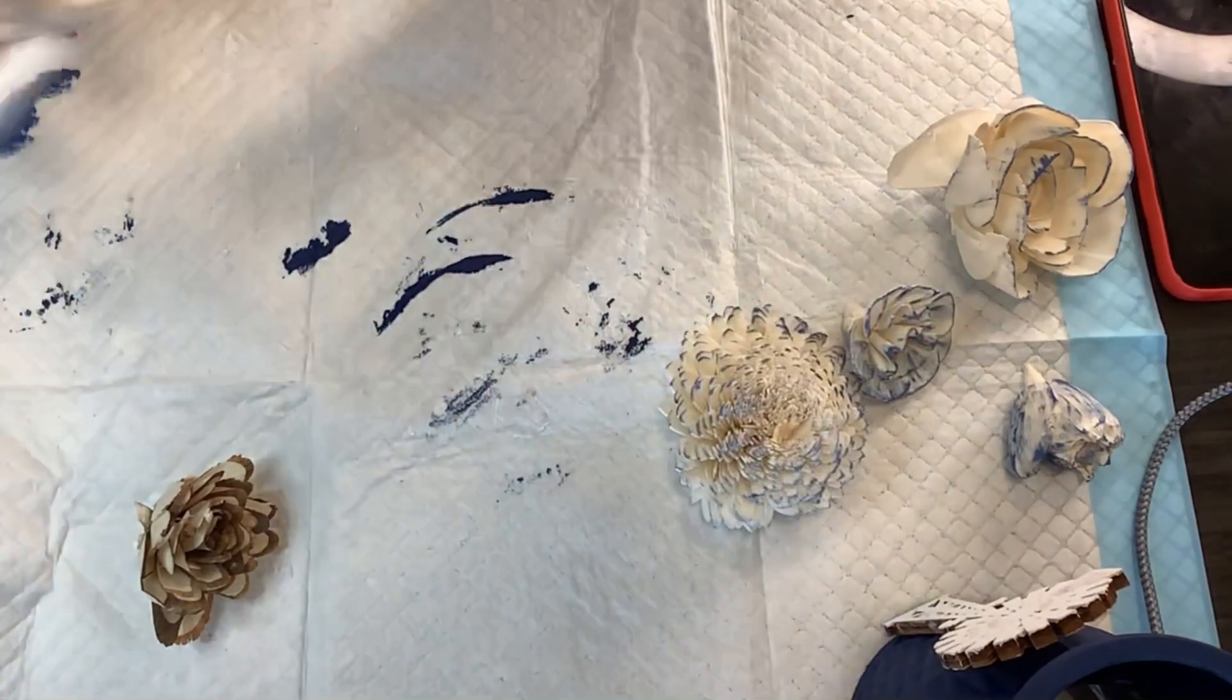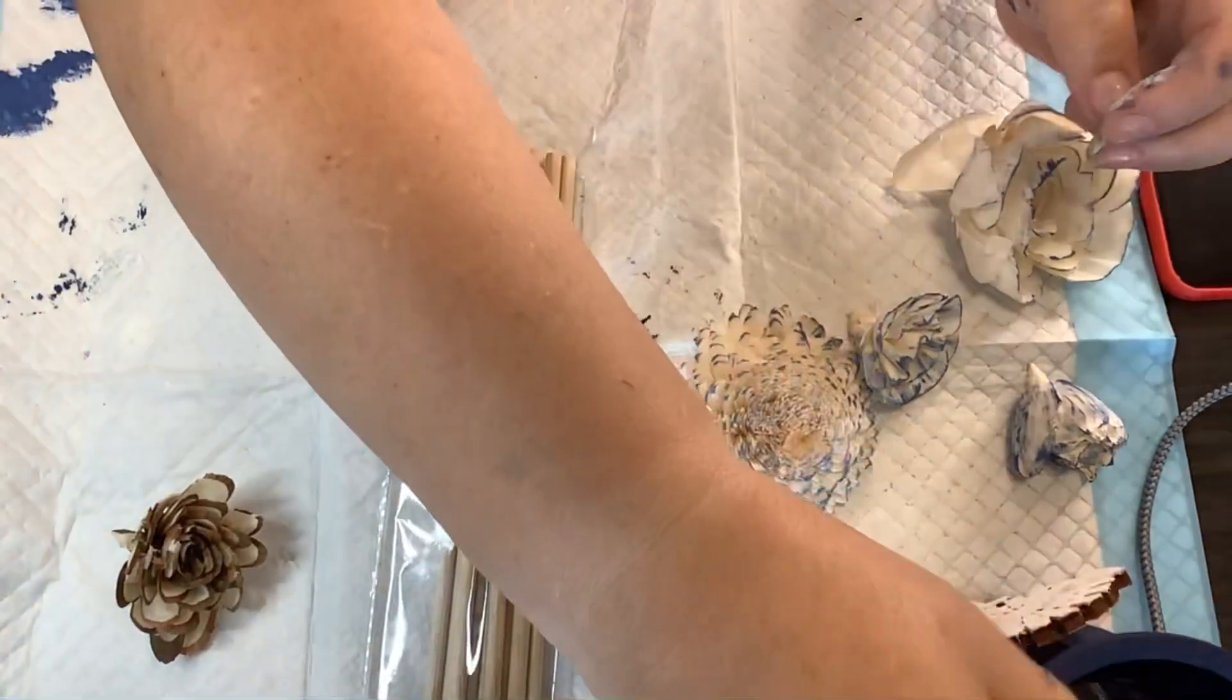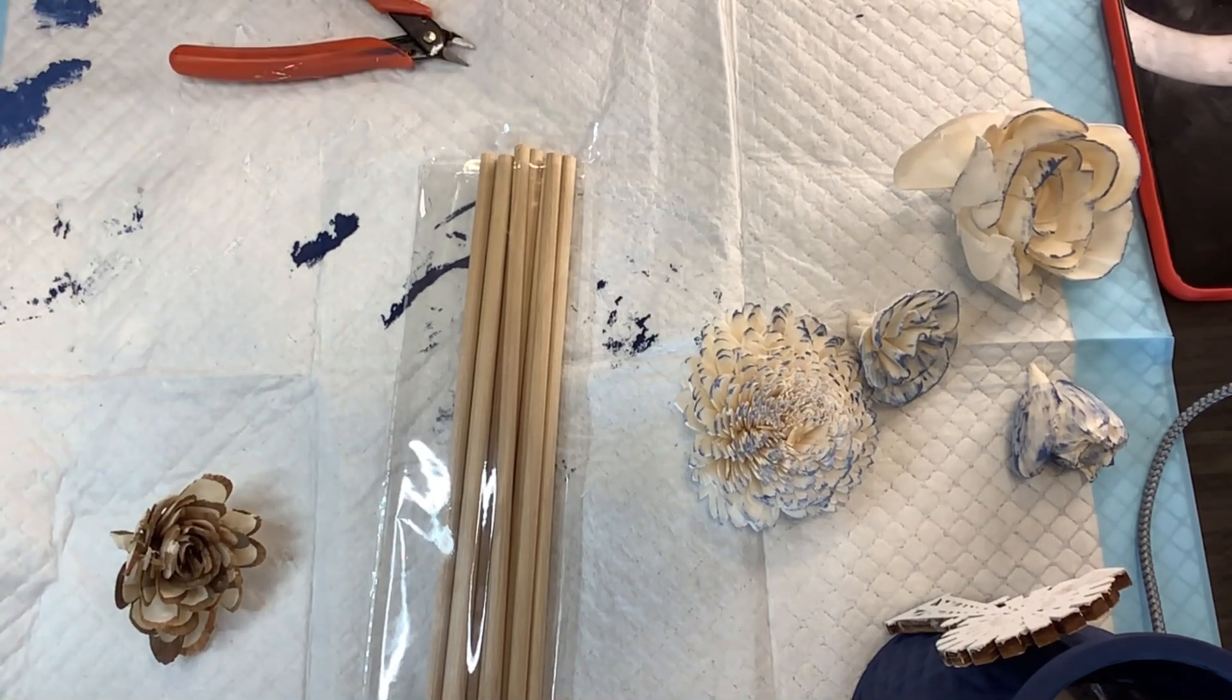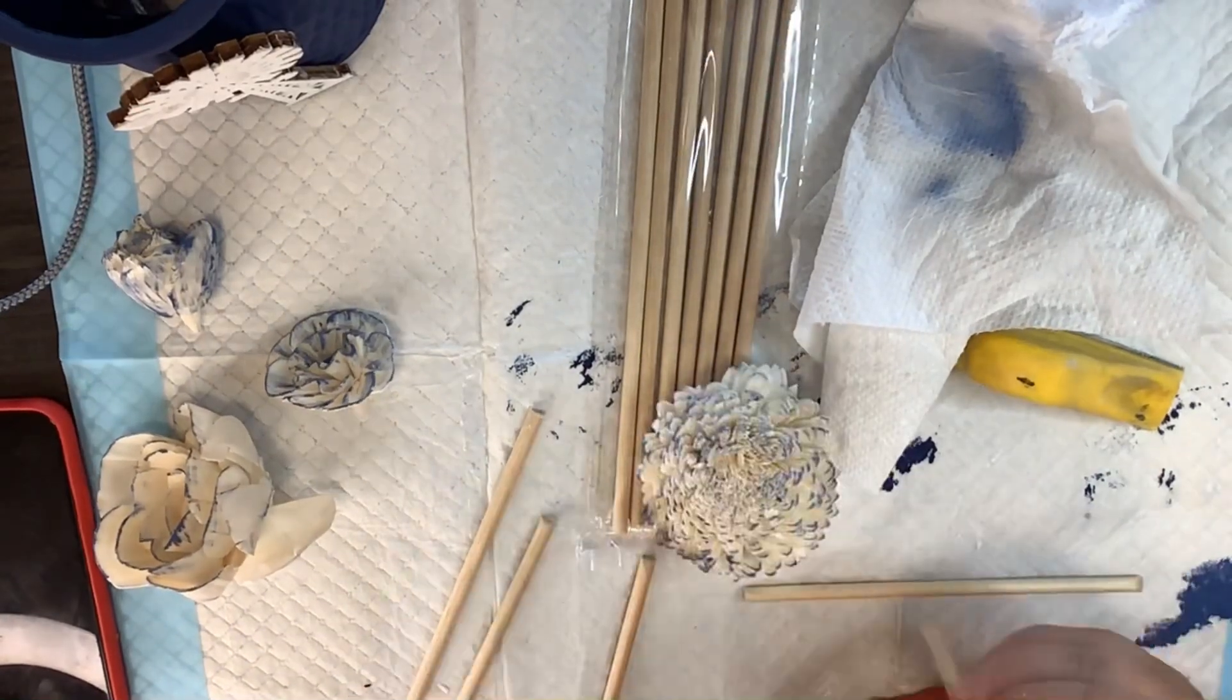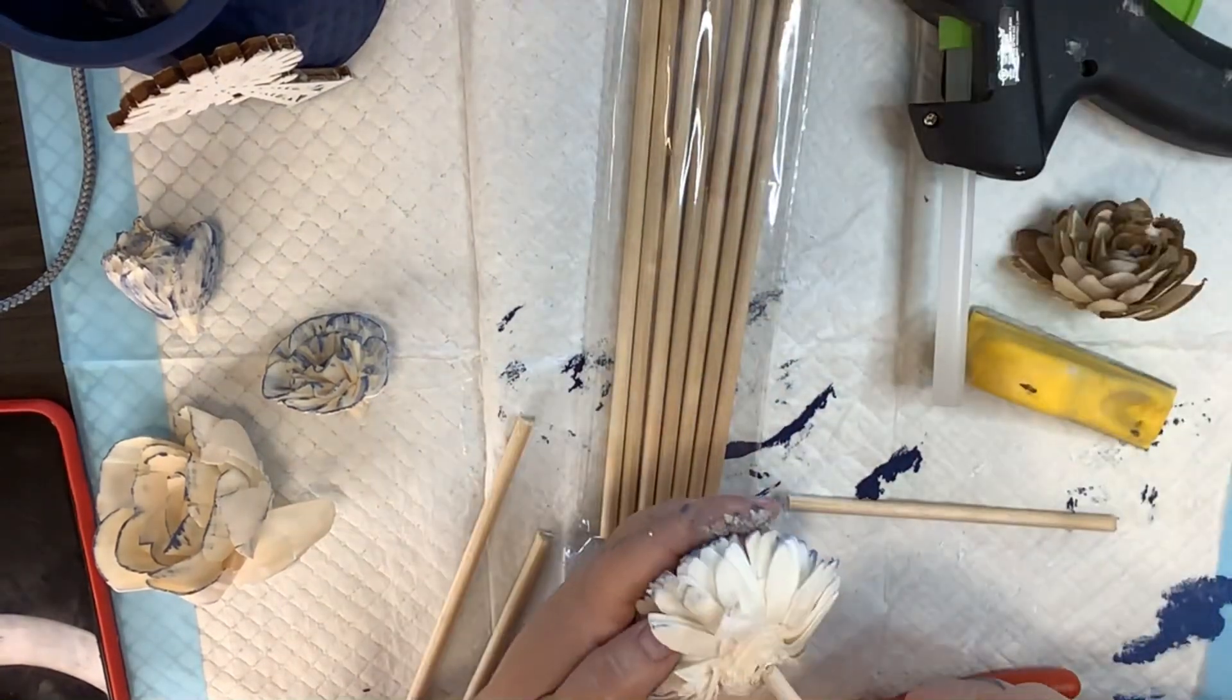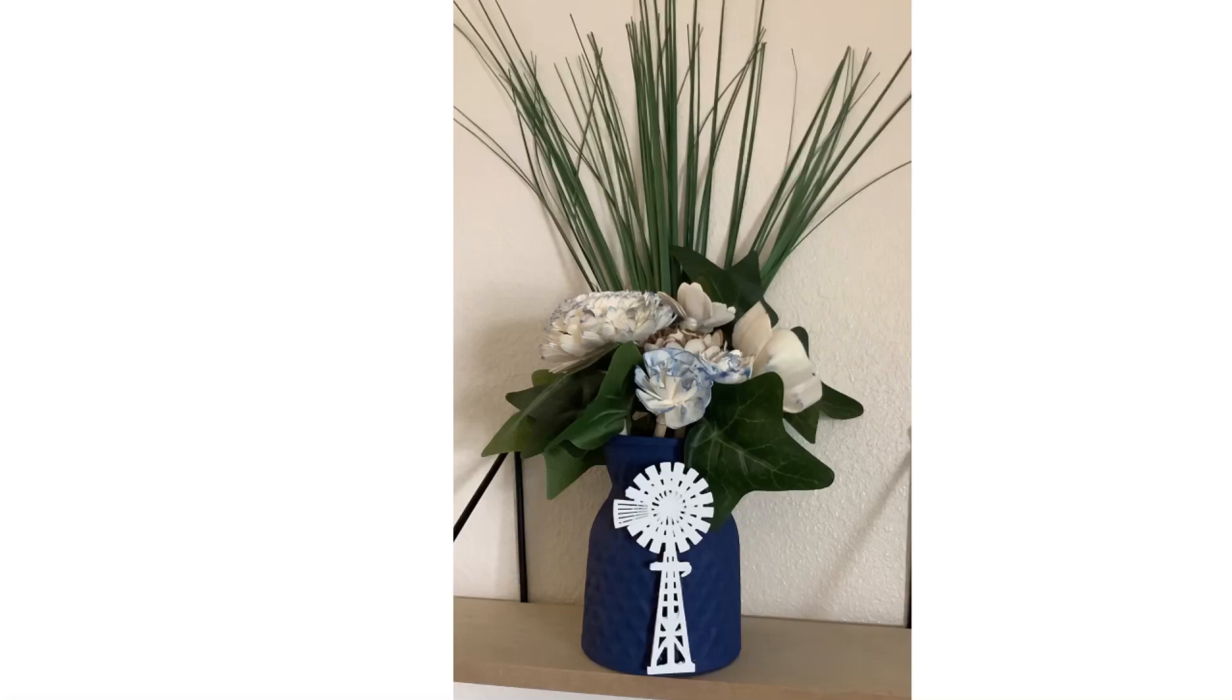I just take these Dollar Tree dowel rods, cut them down about in half, and then I take these and I just glue them to the flowers. Some of the flowers have holes in the bottom which makes it a lot easier, and if you buy the stems with the flowers they will just go right into the flowers instead of having to use the hot glue. But I still think it turned out amazing y'all. Again, I'm not a florist, but isn't that adorable? And I love the pop of blue that the flowers have on them.